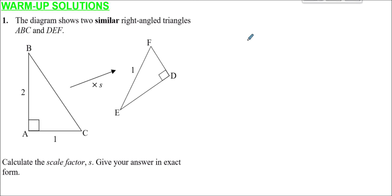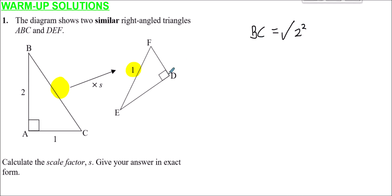Question one: we have a diagram showing two similar right-angled triangles ABC and DEF. We need to calculate the scale factor s, giving the answer in exact form. Moving from ABC to DEF, we're given the size of the hypotenuse on the transformed triangle. We can work out the original hypotenuse of ABC by applying Pythagoras, so the length of side BC will be the square root of AB squared plus AC squared — that's 2 squared plus 1 squared — so side BC equals the square root of 5.